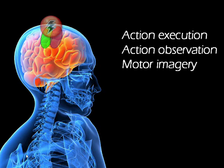After a stroke, the mirror neuron system is often damaged and patients can no longer execute actions. However, they can usually still observe and imagine actions.